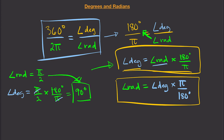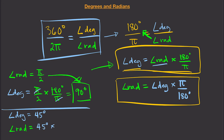Now what if the given angle is in degrees? For example, if the angle in degrees is 45, to convert that into radians: angle in radians equals 45 times π over 180. Since 45 divided by 180 is 1/4, this gives us π over 4. So 45 degrees equals π/4 radians.